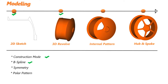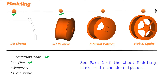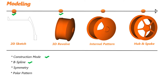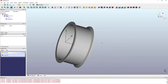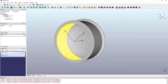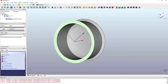Hello viewers, welcome back. Today we are going to complete the five-spoke wheel model we started in the previous video tutorial. If you haven't seen that, go watch it — the link is in the description. In this tutorial we start with the 3D model already built, then add an internal sketch, pocket it, and use polar pattern to create the five-spoke wheel.